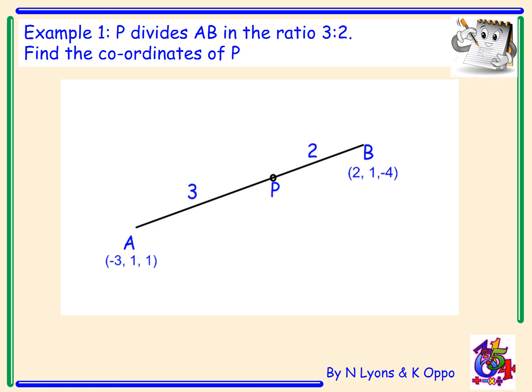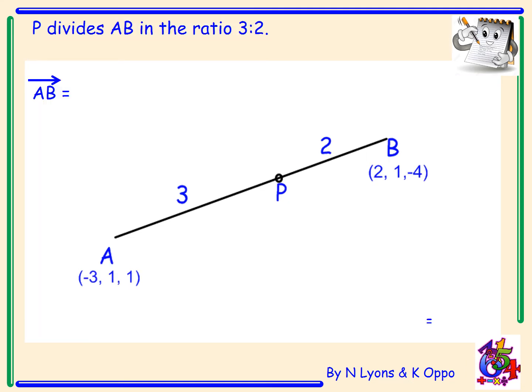What can we work out from this? The first thing we can work out is that P divides AB in the ratio 3 to 2. Then we can work out what AB is, the vector AB. For that point A, what do I have to do to get to point B? That gives me the vector...